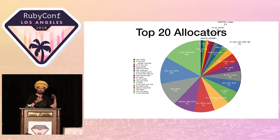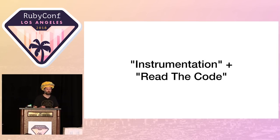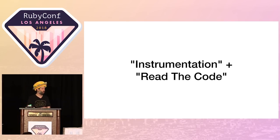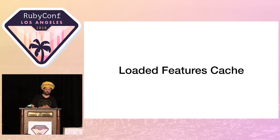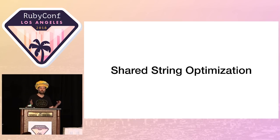After doing a process like this, I combine instrumentation with reading the code — I'll go look at those functions that are allocating a lot of memory, then figure out how I can reduce the memory usage for that particular function. With that, let's take a look at the loaded features cache — the first patch we introduced.